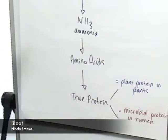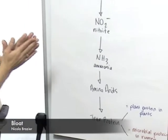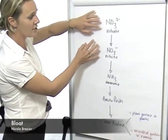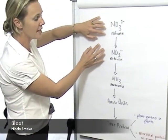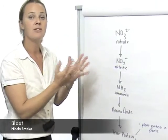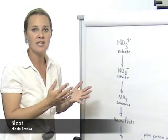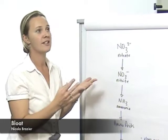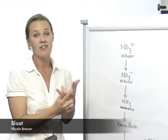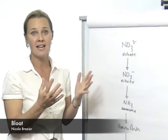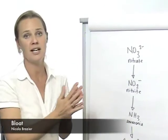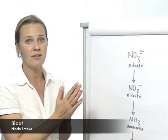The high incidence of bloat occurs when the nitrate and nitrite are actually trapped in the plant. This is particularly common with legumes, but also common under certain conditions — for example, frosts, heavy dew, overcast weather, and shorter day lengths all contribute to having higher soluble protein levels within the feed.